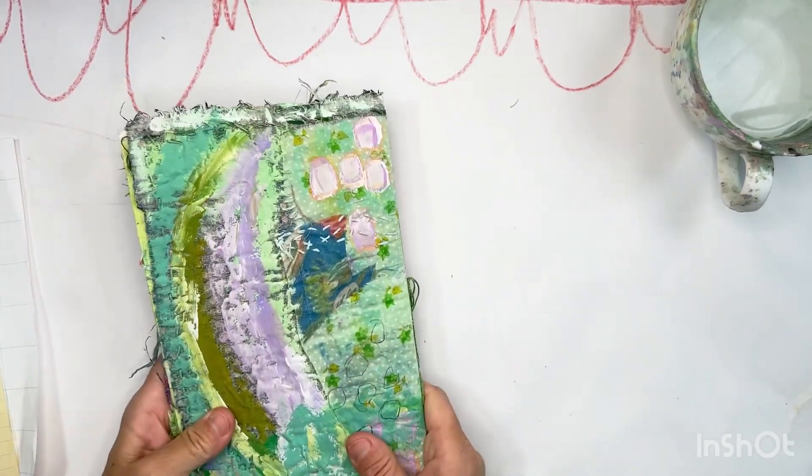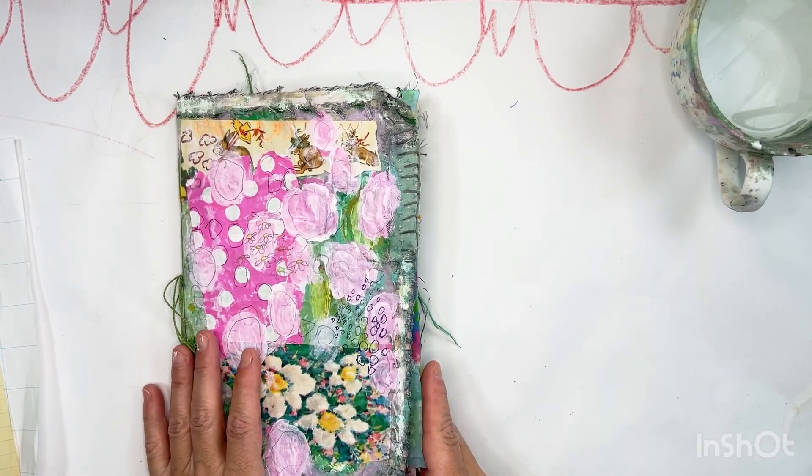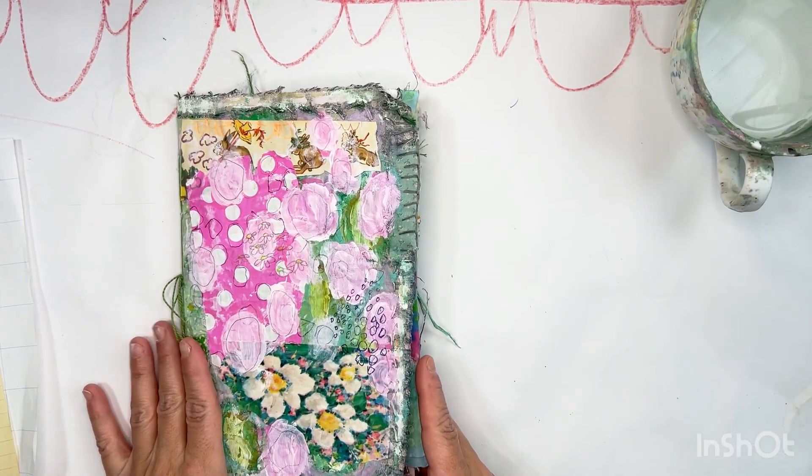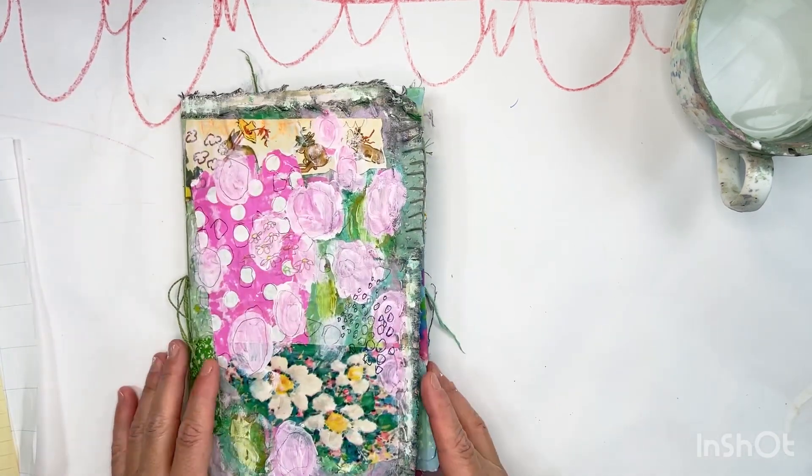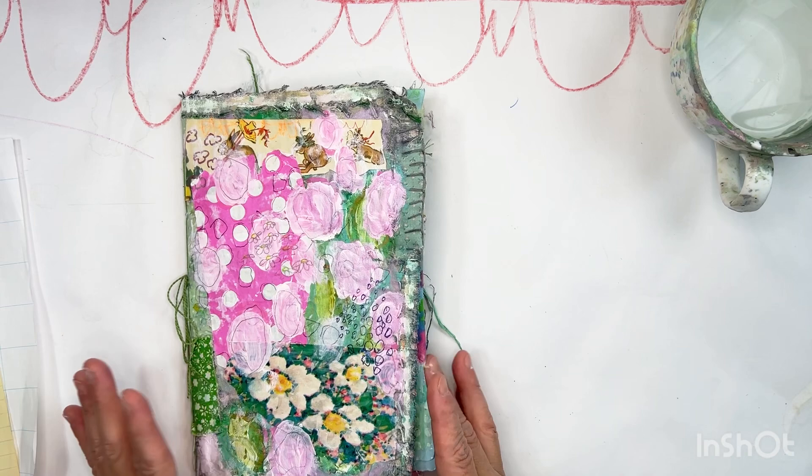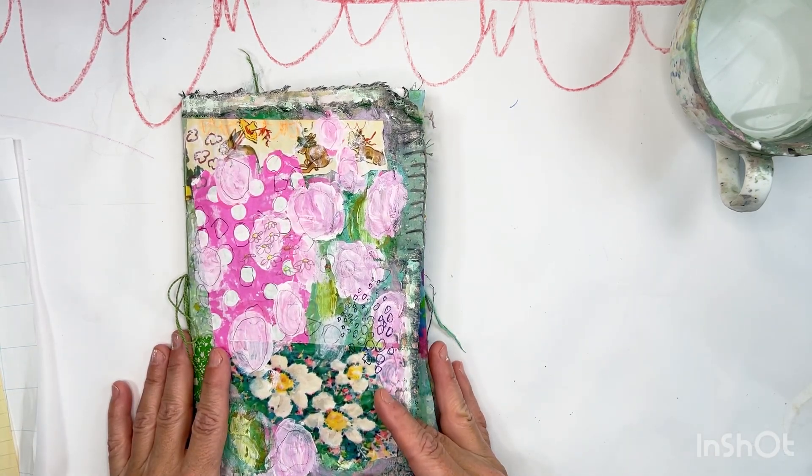So this is my envelope journal that I created in my Trashed and Treasured course. If you haven't heard about this, it's a free course I'm offering on my website StellarJStudios.com, so just click in the link and you'll be able to get enrolled for free.